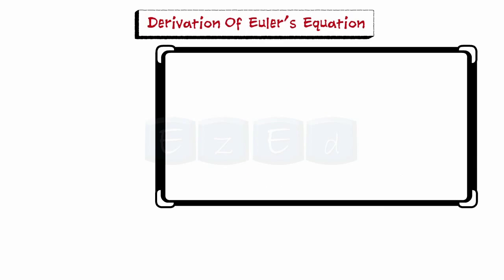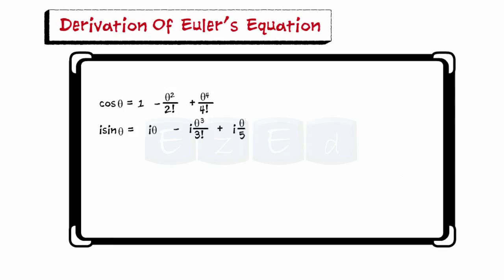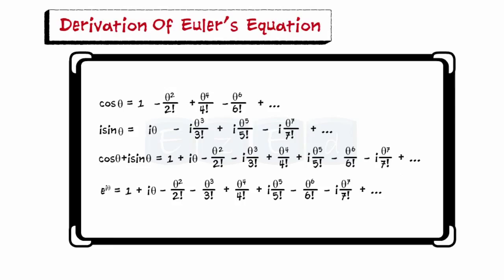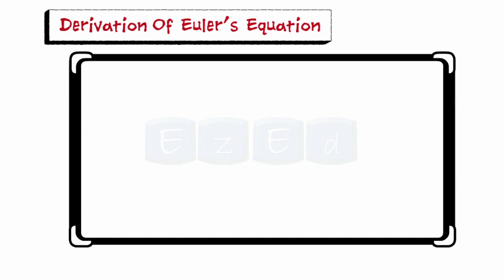He completed this relation by bringing the imaginary number i into the series. All the terms in e^(iθ) equal all the terms in cos θ plus i sine θ. Therefore, we get e^(iθ) = cos θ + i sin θ, which is Euler's equation.